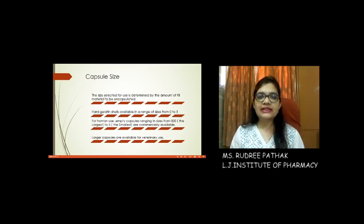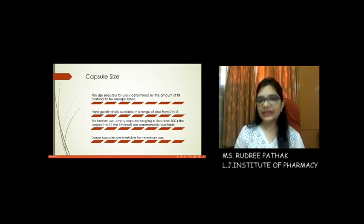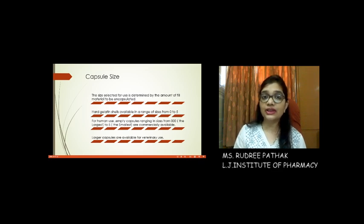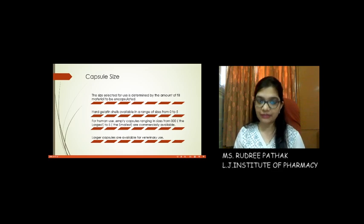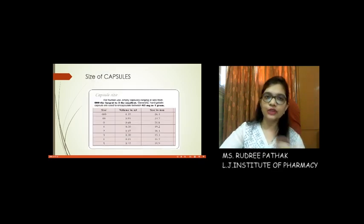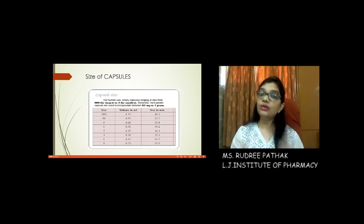A variety of capsule sizes are available in the market. Usually, capsule size starts from triple zero and goes up to size five. Triple zero size is for veterinary use — for animal use. For human use, it starts from size 0 to size 5. Depending on the size of capsule, it has a certain fill capacity. Size triple zero has the largest fill capacity and size 5 has the smallest fill capacity. A table is provided showing the fill capacity of each particular capsule size, indicating how much volume can be incorporated.